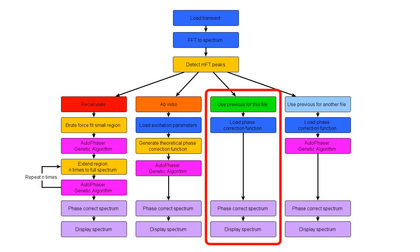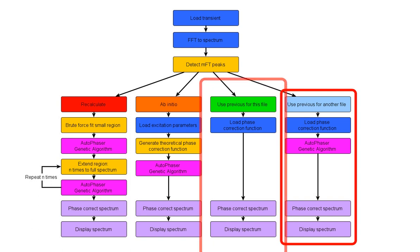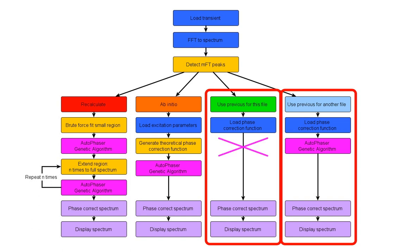You can simply ask Autovectus to reapply a previously solved phase correction function for the current file. Or, if you have several files that were recorded using the same settings, you can ask Autovectus to use the phase correction function for a similar file and optimise it for this file. The difference is that when using a previously optimised function for the same file, Autovectus knows where the file is and doesn't have to use the genetic algorithm to optimise it. However, when using a phase correction function for a different file, you need to tell Autovectus where that file is, and then the phase correction function will have to be re-optimised in case there was any space charge or other change which affected its accuracy. When we get to this step, you'll see that this is all automated.